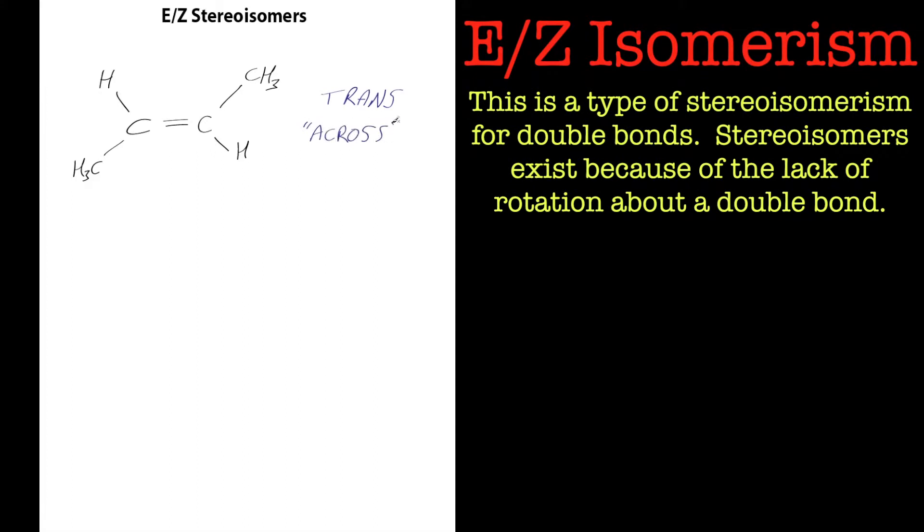So if we look at this butene molecule, we'll quickly be able to suppose it's trans, because that means across, like transatlantic. But is it E or Z? Well we don't know what that is yet. So let's have a look at this.